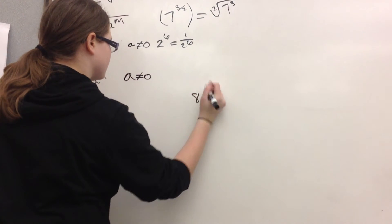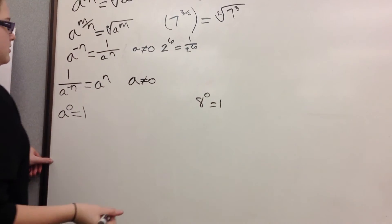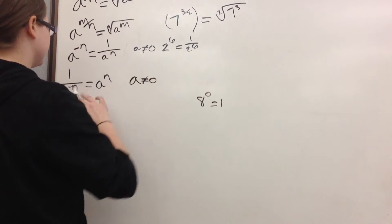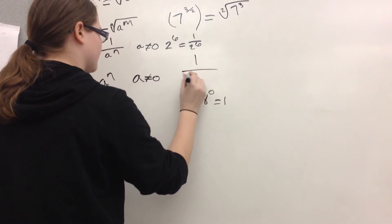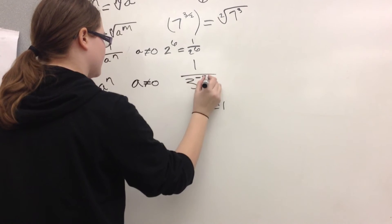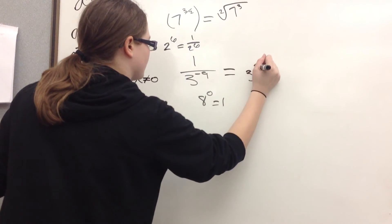So 8 to the 0 equals 1. And the example for this one is 1 over 3 to the negative 9th. It's equivalent to 3 to the 9th.